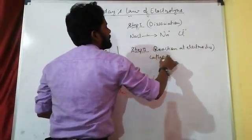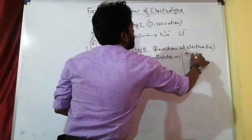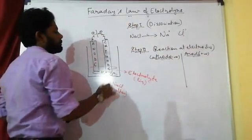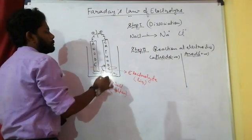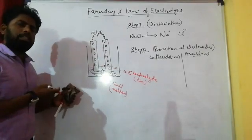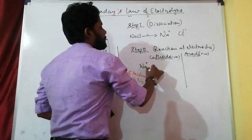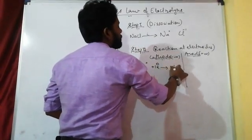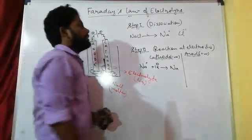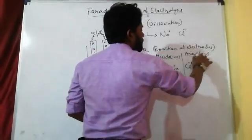At the two electrodes: the cathode is negative and the anode is positive. After dissociation into Na⁺ and Cl⁻, the cation Na⁺ moves to the cathode and the anion Cl⁻ moves to the anode. Na⁺ arrives at the cathode, which is negative, and sodium gets deposited there.